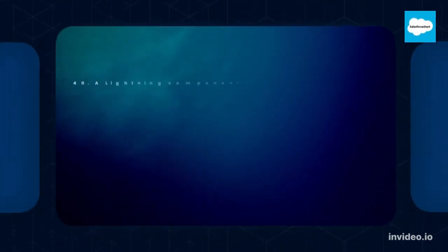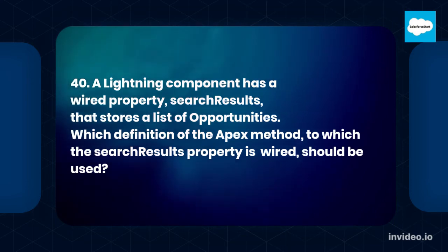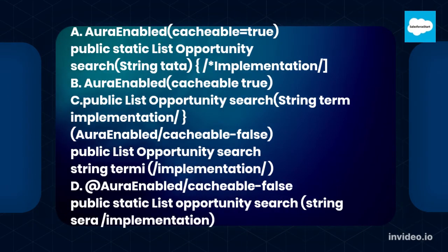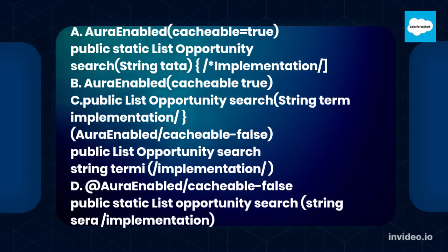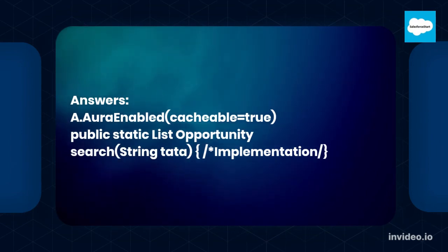Question 40. A Lightning Component has a wired property, SearchResults, that stores a list of opportunities. Which definition of the Apex method, to which the SearchResults property is wired, should be used? Answer: A. @AuraEnabled(cacheable=true) public static List<Opportunity> search(String term) { implementation }.